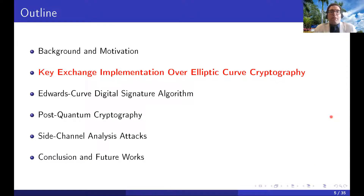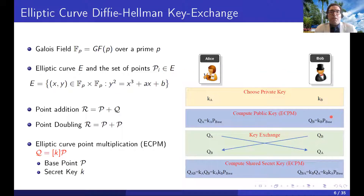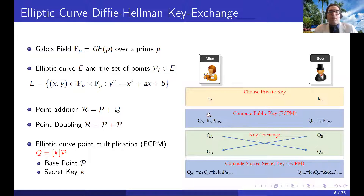We will now speak about key exchange implementation over elliptic curve cryptography. The elliptic curve E can be formulated as a general equation. In the Diffie-Hellman key exchange mechanism, Alice and Bob each choose their own private key KA and KB as a random number and then perform the elliptic curve point multiplication function ECPM. This function is a one-way function — we can efficiently compute KA times P, but given Q and P, we cannot find K using current computers, making it a hard problem.